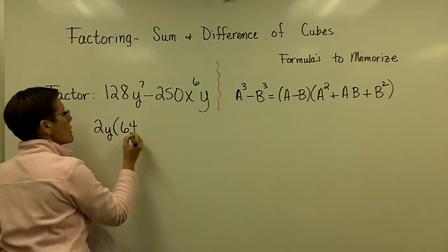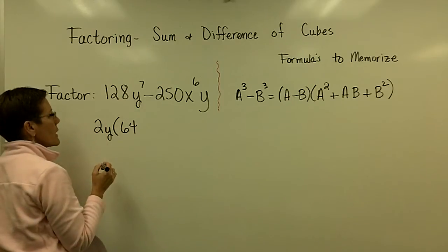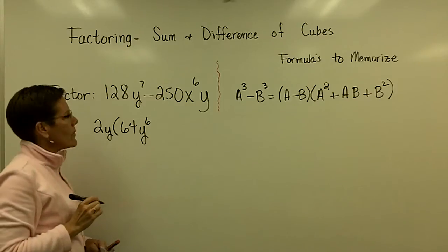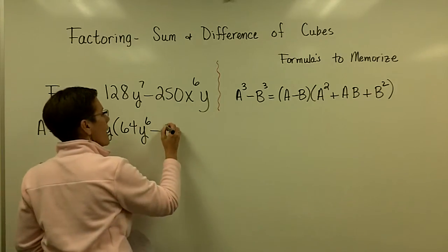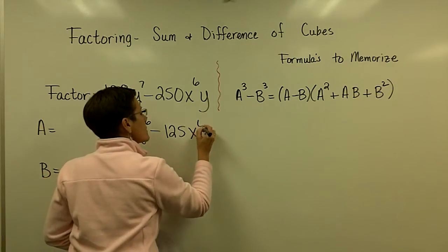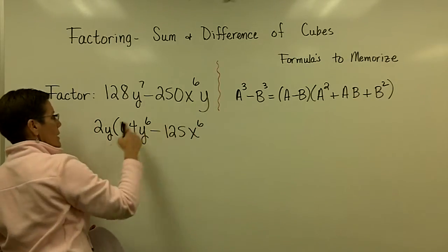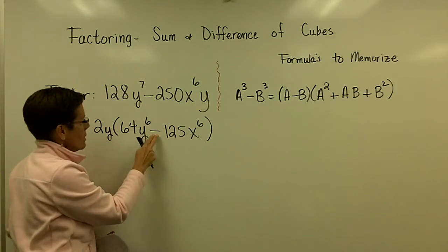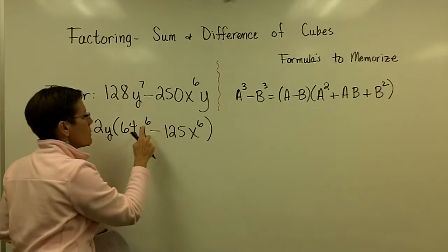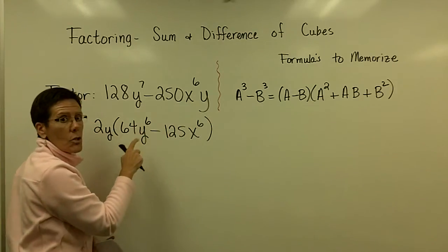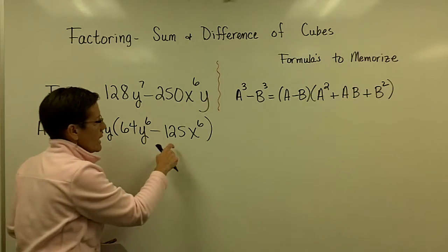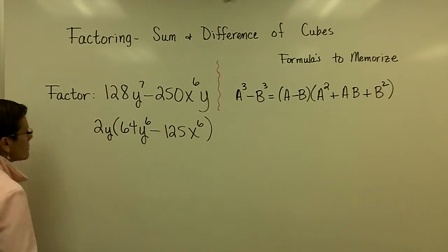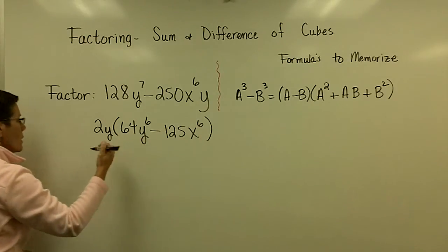I need a 64 here - two times 64 is 128. Y to the first times Y to the sixth is Y to the seventh. And when I take a two out of that, I have 125 X to the sixth. That Y right there is already covered. This is starting to look like the difference of cubes. Both exponents are divisible by three. And I know the cube root of 64 is 4 and the cubed root of 125 is 5.